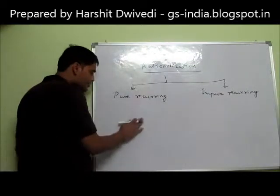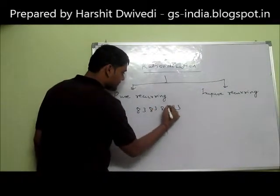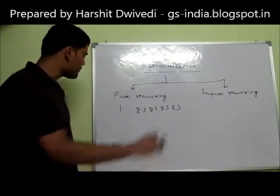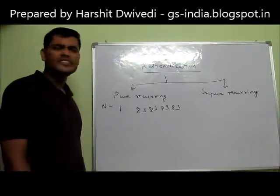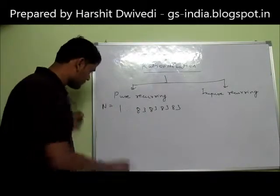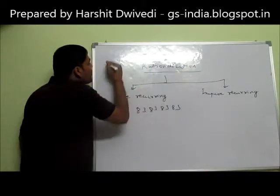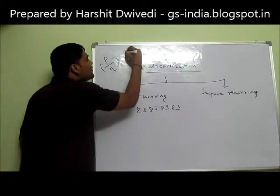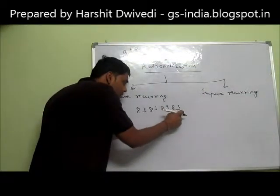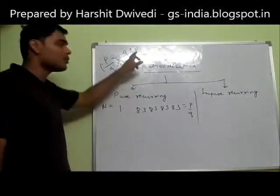Let us write an example of pure recurring decimals: 1.83838383... So how are we going to rationalize this number? Suppose this number is equal to n, so n = 1.838383. We have to rationalize this number. Rational numbers are all those numbers that can be denoted in the form of p upon q, where q is not equal to 0 and p and q are integers. So we have to denote this number in the form of p upon q, where p and q are integers and q is not equal to 0.